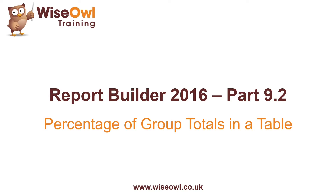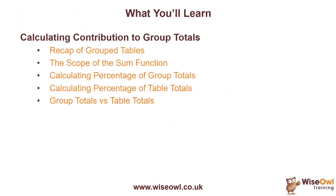Welcome to this Report Builder tutorial. In this video we'll explain how to calculate the percentage of group totals in a table. We'll start with a quick recap of creating a simple grouped table and then explain how the scope of the sum function affects the results it returns based on the location of the function inside a group. We'll show how to manipulate the scope of the function to calculate the percentage contribution of detail rows to the group totals and also to the table totals. In the final part we'll compare the group totals with the table totals again by manipulating the scope of the sum function.